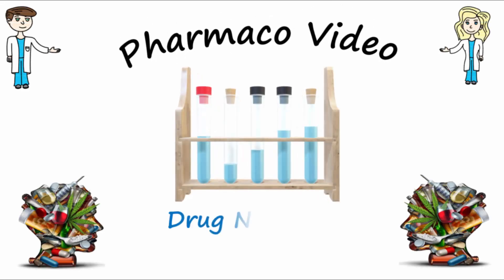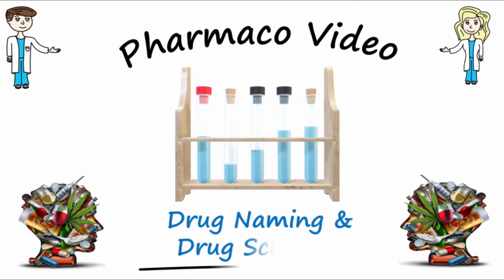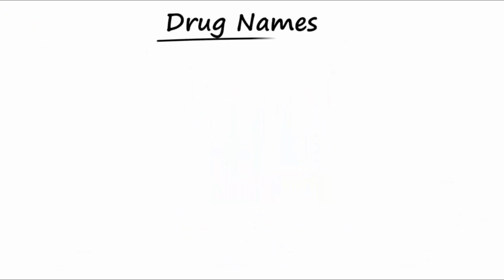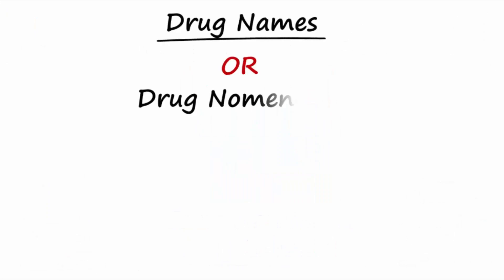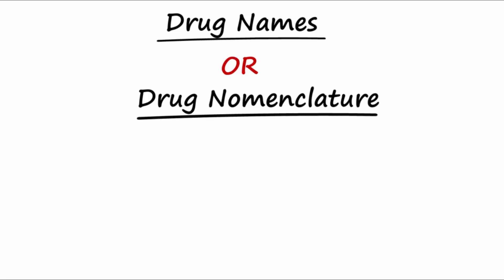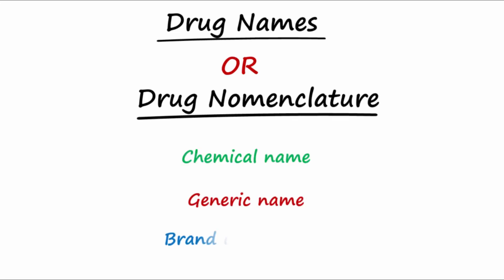Let's talk about the different names and schedules for drugs. A more scientific term for names is nomenclature. Drugs have different names and may be known by their chemical name, generic name, and brand or trade name.